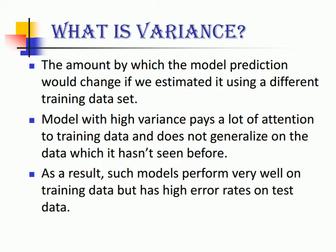Let's come to what variance is. Variance is the amount by which the model prediction would change if we estimated the same model using a different training data set. A model with high variance pays a lot of attention to the training data and does not generalize on data which it hasn't seen before. Such models perform very well on training data but have high errors on testing data because they have not generalized properly.